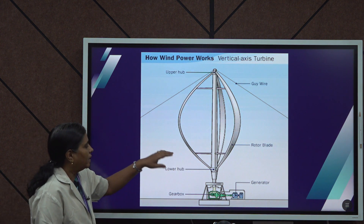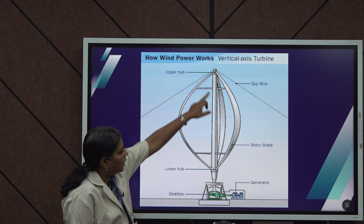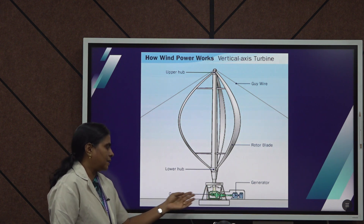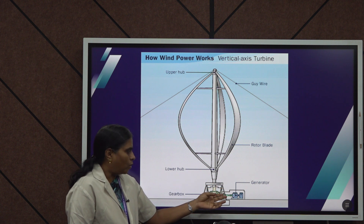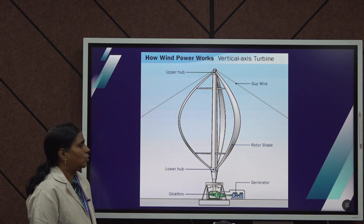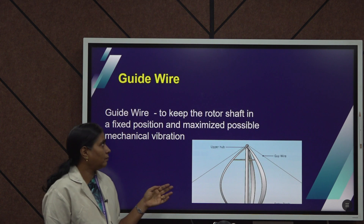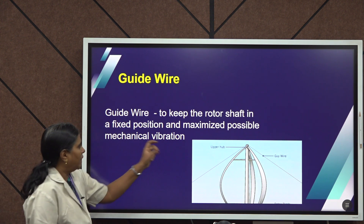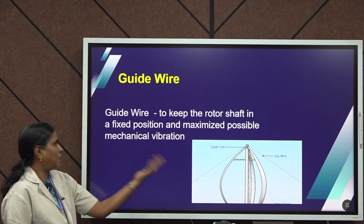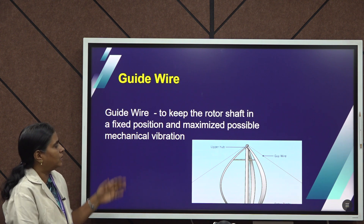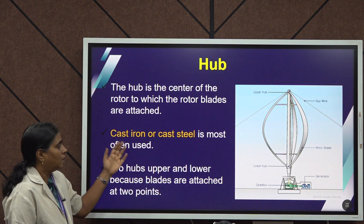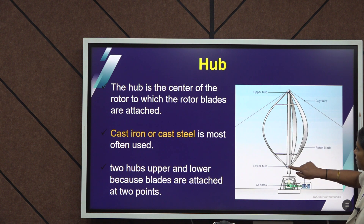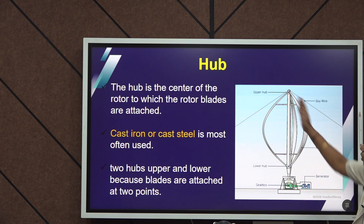These are the different parts of the wind turbine: lower hub, upper hub, and in the centre there are guy wires, rotor blades, and the main housing is at the base along with a generator and gearbox. The guide wire or guy wire keeps the rotor shaft in a fixed position and minimizes mechanical vibration. The hub is the centre of the rotor to which the rotor blades are attached — there is a lower hub and an upper hub.